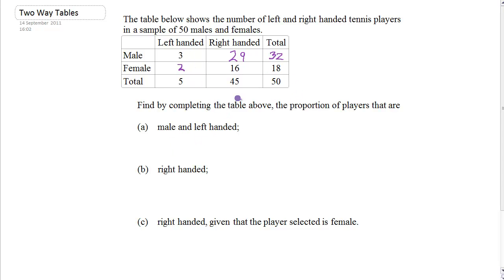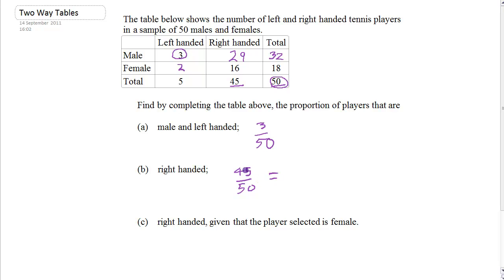So we want to find the proportion that are male and left-handed first. The number of males who are left-handed is three, so that's three out of 50. Next, we want to find the proportion of players that are right-handed altogether. The total of right-handed people is 45, also out of 50. So the proportion that are right-handed is 45 out of 50, which cancels down — five goes into 45 nine times, five goes into 50 ten times — so the answer is nine tenths.